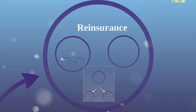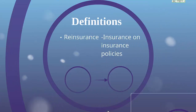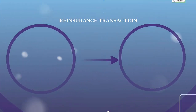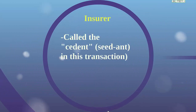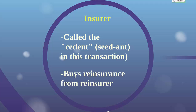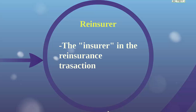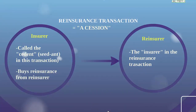Now let's look at reinsurance. Not every company purchases reinsurance, but most companies today do buy reinsurance to protect themselves given global business and the catastrophes of the last 20 or 30 years. Reinsurance can be defined as insurance on insurance policies. In the reinsurance transaction, the insurer is known as the cedent — they buy the reinsurance from the reinsurer to protect themselves. The reinsurer is the insurance carrier in the reinsurance transaction, and a reinsurer doesn't have to specialize only in reinsurance — companies like Hartford and Travelers also engage in reinsuring other companies. The reinsurance transaction is called a cession, where the insurance company cedes a portion of insurance risk to the reinsurer.